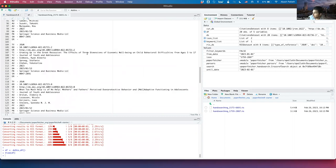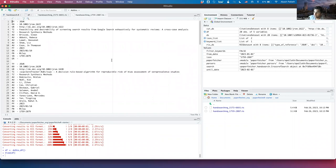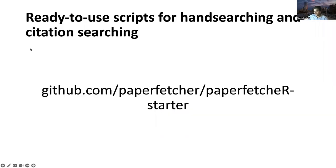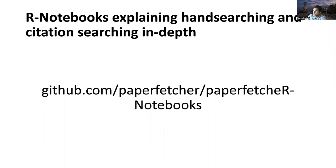This is the data that we got from hand searching. This script and also some other scripts for citation searching are available on our GitHub page. These are almost ready to use — you just need to change a couple of parameters. If you're interested in understanding how the hand searching and citation searching code works, we've got R notebooks that explain the different steps and segments of code in depth.